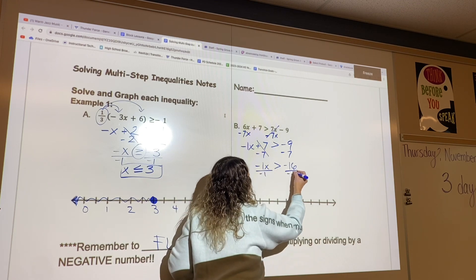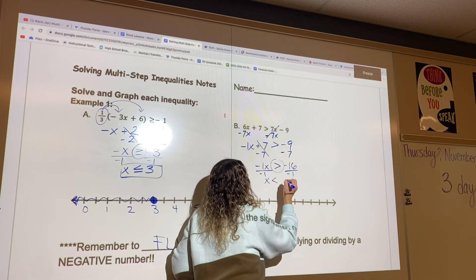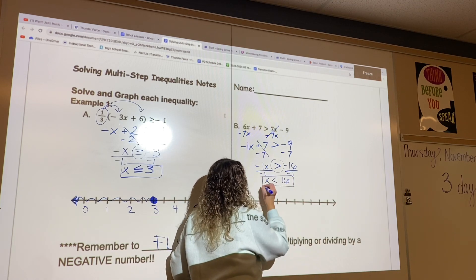And again, when I divide by a negative, I'm going to flip my sign. x is less than 16 now. Perfect.